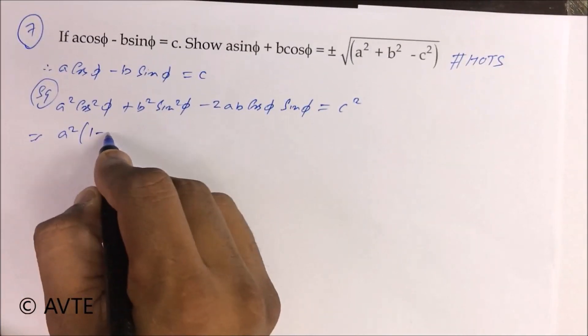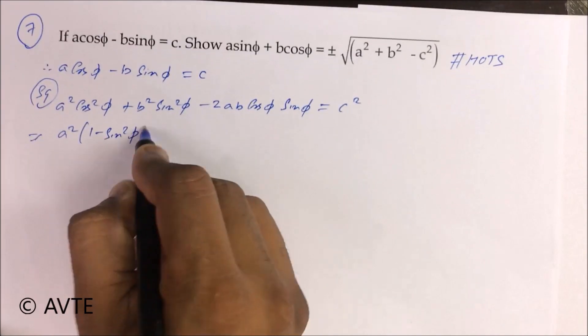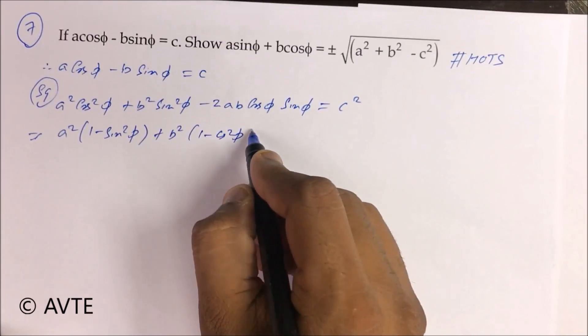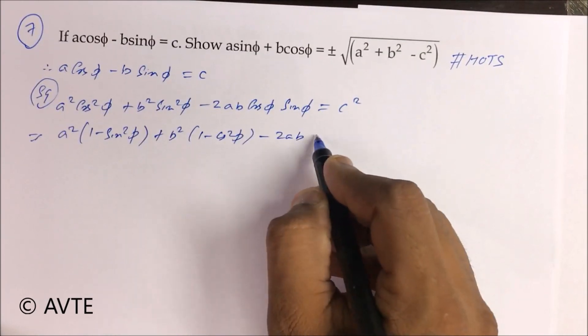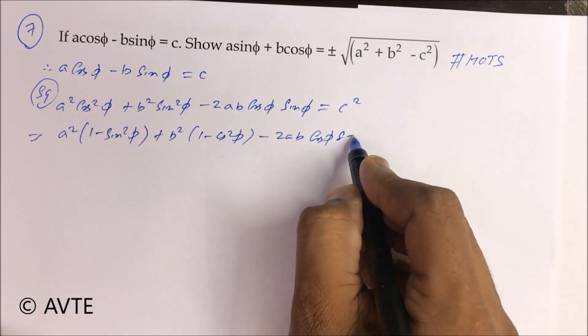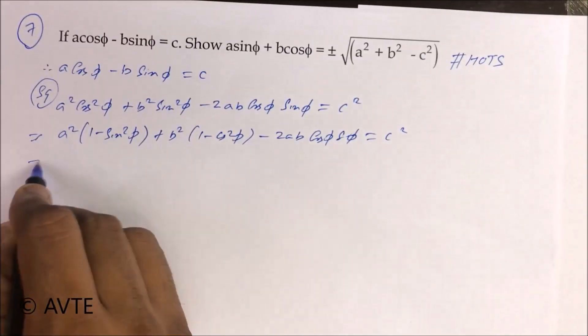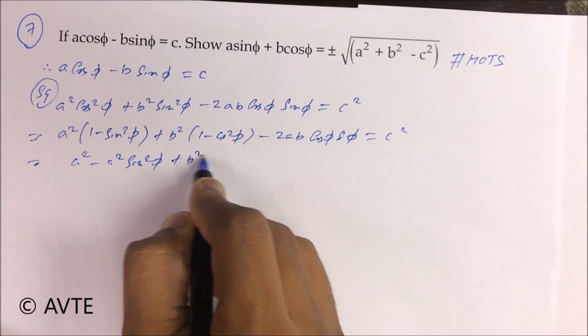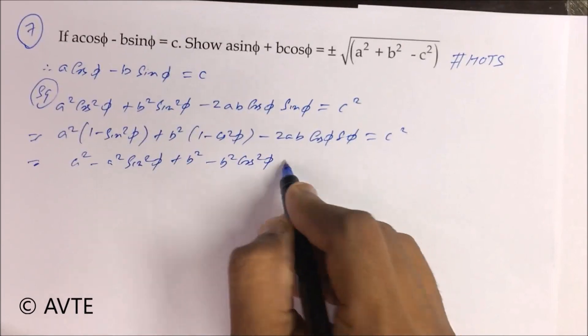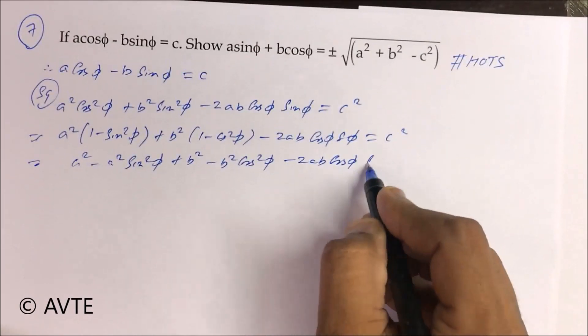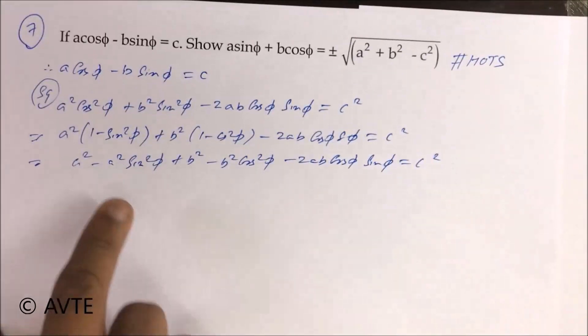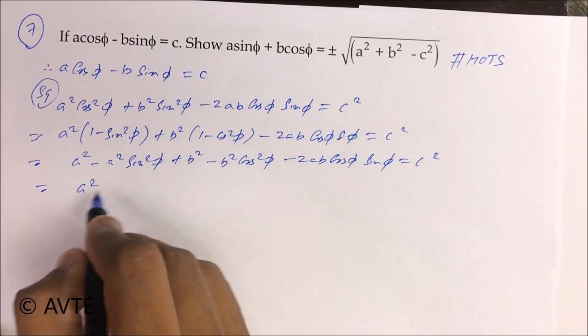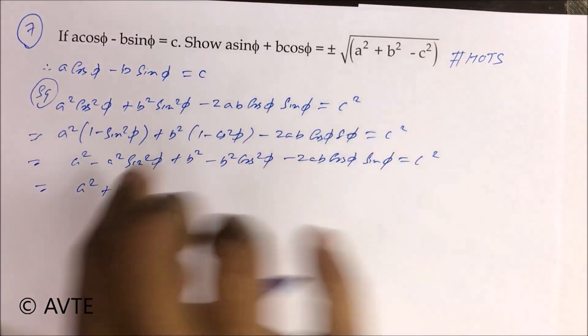So guys, this is A square 1 minus sin square φ. So guys, now you can shift them. This is A square plus B square and you can take C square there.